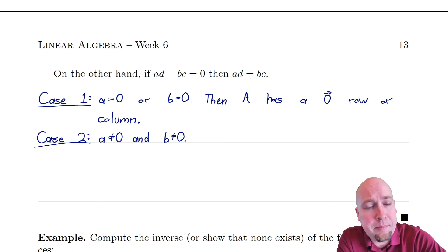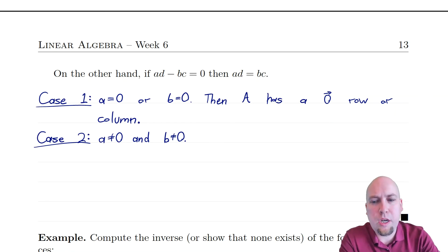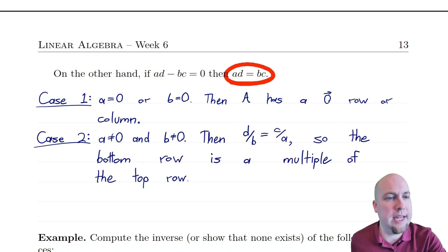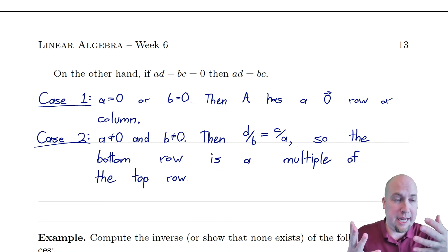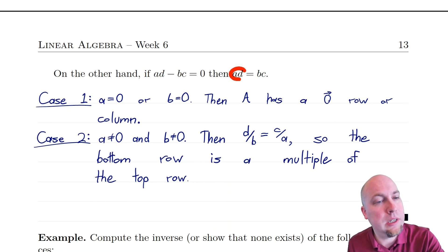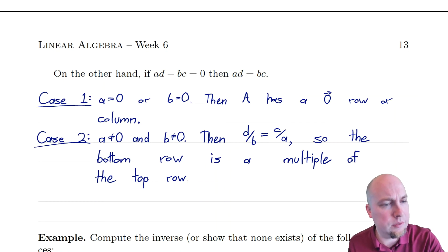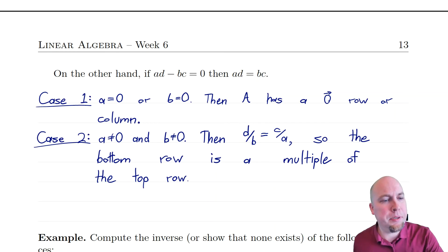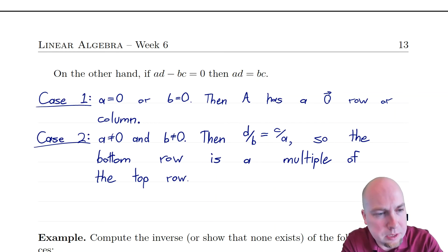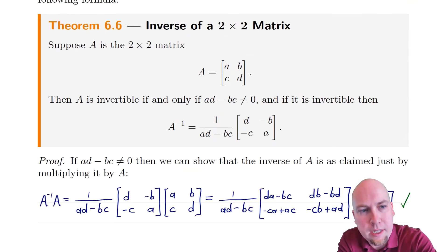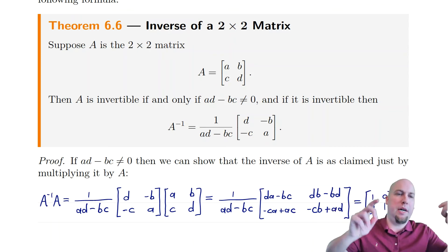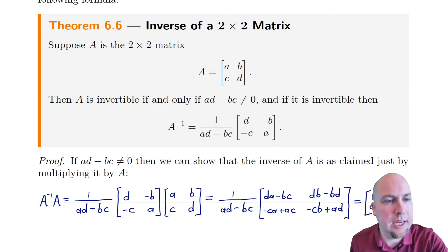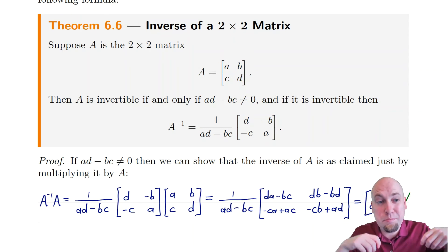Case two: if A and B are both non-zero, I can divide the equation AD equals BC by AB. On the left I get D over B, and on the right I get C over A. This means the ratio of the bottom entries to the top entries is the same in both columns — D over B equals C over A. In other words, the bottom row of the matrix is a multiple of the top row.